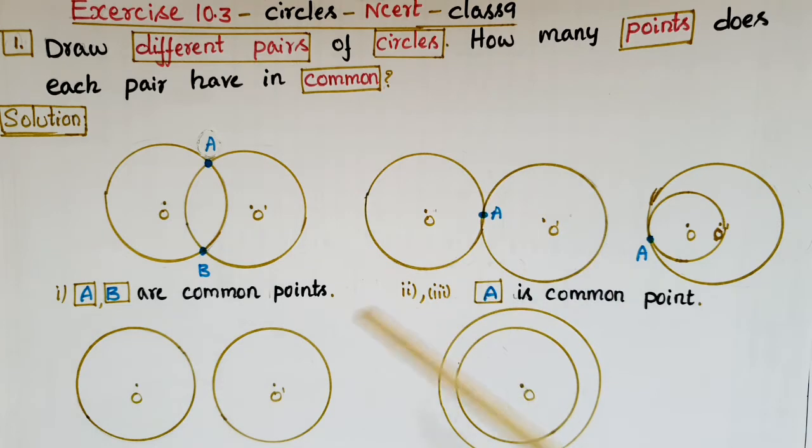If you see these figures, in the first figure, these two circles with centers O and O' intersect at two points. So here A and B are the common points for these two circles.